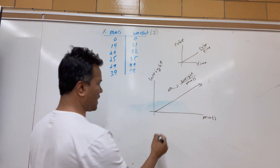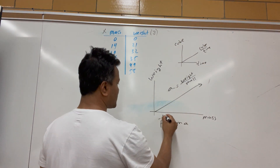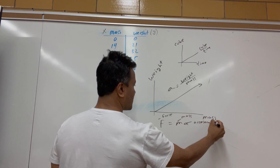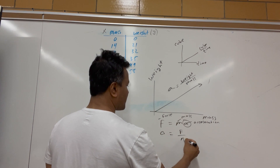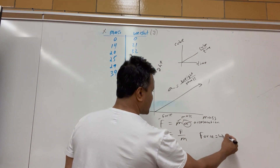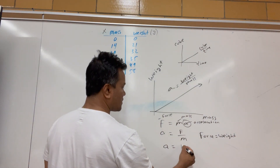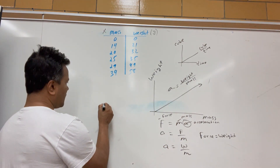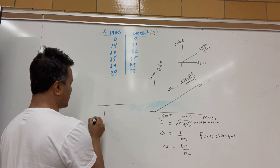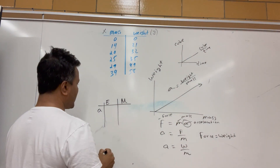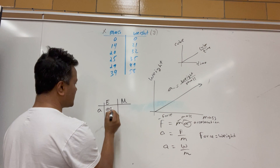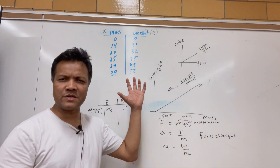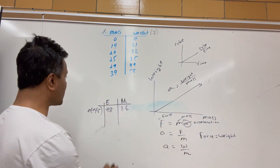That comes from Newton's second law: F = ma, where F is force, m is mass, and a is acceleration. If you isolate a, you get a = F/m, and since force equals weight, acceleration equals weight over mass. Acceleration due to gravity on Earth is 9.8 m/s² and on the Moon it's 1.6 m/s². We'll use the TI-84 to find the slope and figure out whether we're on Earth or the Moon.